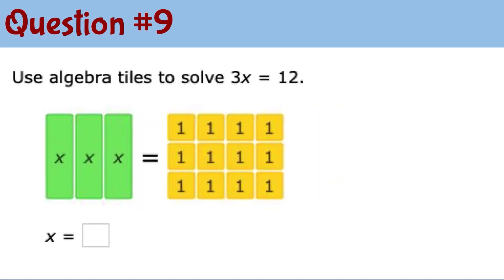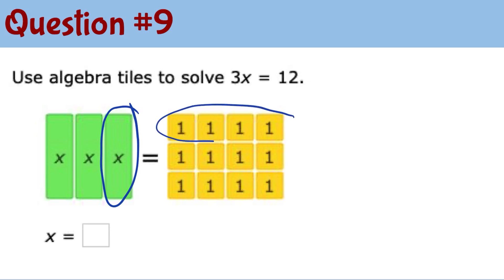Question number 9: use algebra tiles to solve 3x equals 12. Think of it as having 3 pouches and you're going to equally divide 12 coins between 3 pouches. One pouch will have 4, because you need to split up the 12 coins equally. The first set of 4 goes to the 1st pouch, the 2nd set of 4 to the 2nd, and the 3rd set of 4 to the 3rd. So each x tile will have 4 unit tiles — x equals 4.